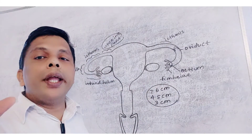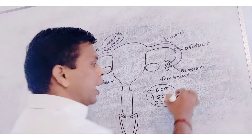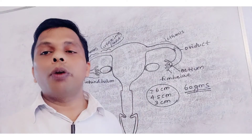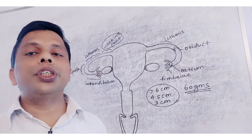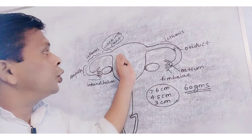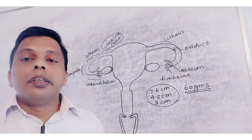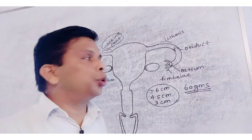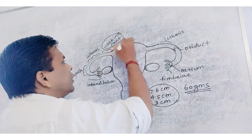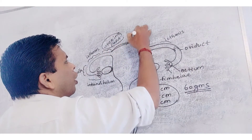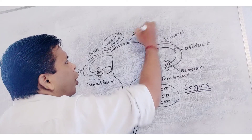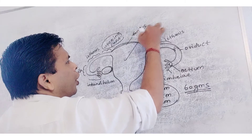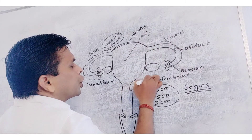This is the measurement of uterus. The adult uterus is about 60 grams in weight. The uterus is differentiated into 3 different zones. The upper part is elevated, which is called as fundus. The middle part is called as body. The lowest part is cervix — the cervix is the narrow part.